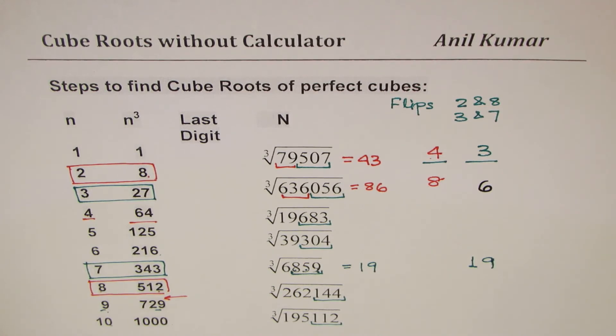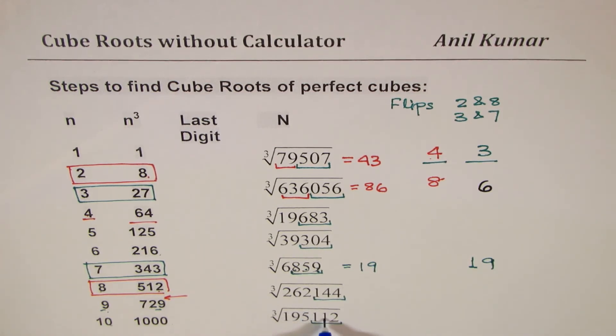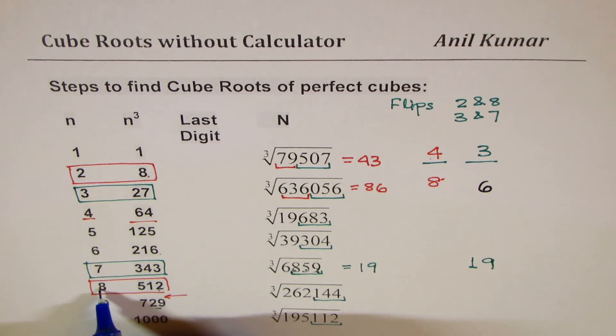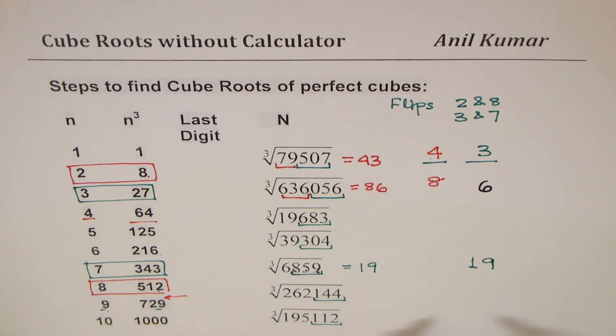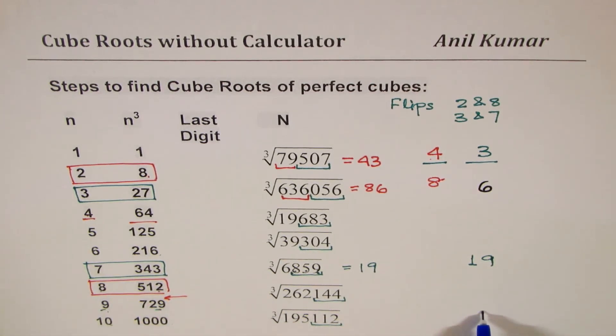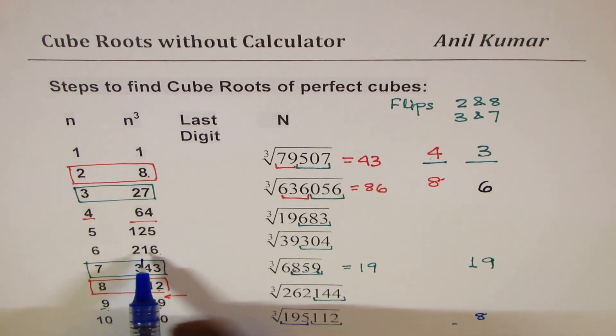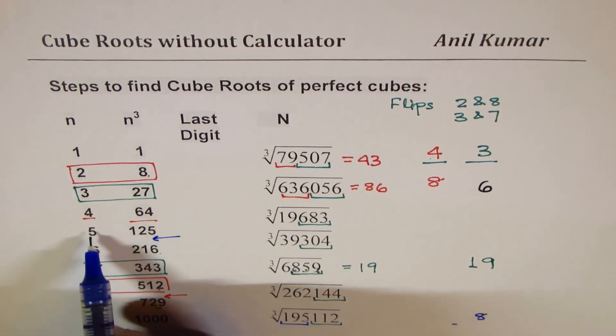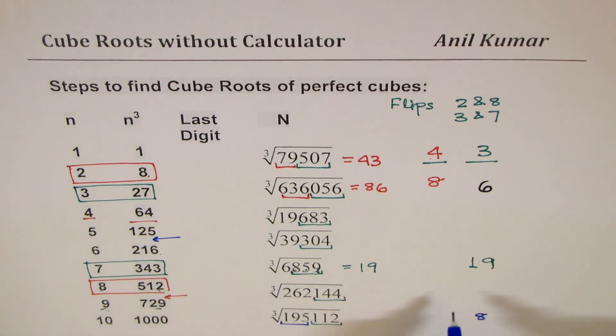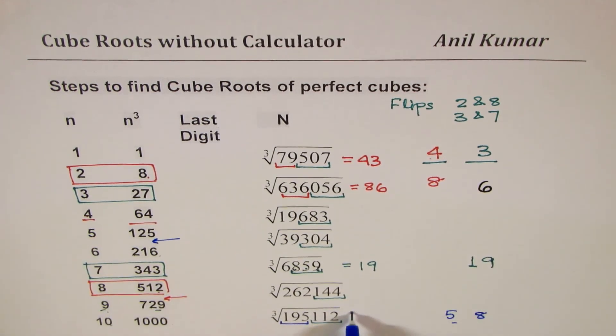So I hope you find it very simple and easy. Now let's take a bigger number. We have 195112. Last digit is 2. Two and eight flips, so the last digit is 2 for 8. Eight cubed is 512. So ones place you get 8. Now for getting the number on tens place, 195 comes where? 195 is between 5 and 6. We'll take the lower number 5. So the answer is 58.